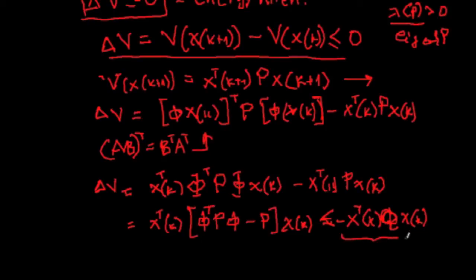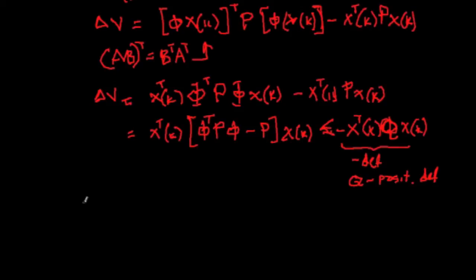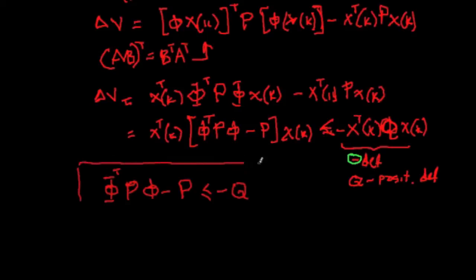To ensure that this term is negative definite, it's essentially stating that I have a positive definite Q with negative sign. This negative sign here. In other words what we have is now the following expression that Φ^T P Φ - P is equal -Q.